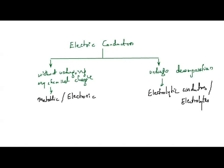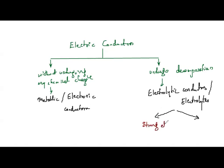Under electric conductors, some conduct electricity without undergoing any chemical change — like metallic conductors. Others undergo chemical decomposition — these are called electrolytic conductors or simply electrolytes. Electrolytes are further divided into two types: strong electrolytes and weak electrolytes.